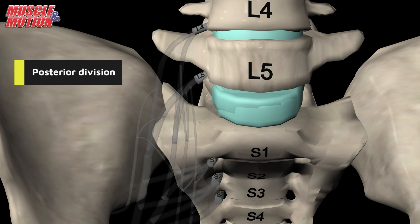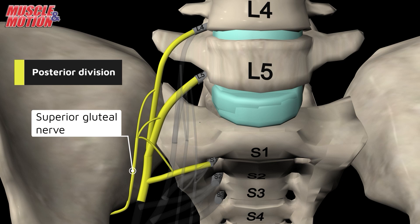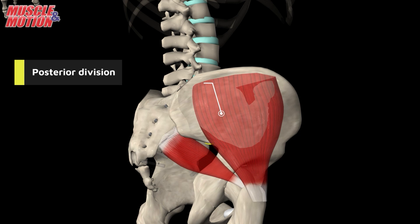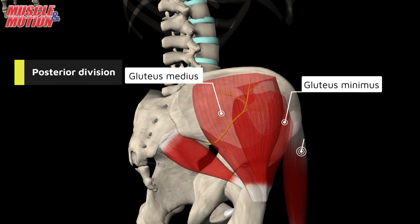The superior gluteal nerve arises from spinal nerves L4, L5, and S1. It innervates the gluteus medius, the gluteus minimus, and the tensor fascia latae muscles.